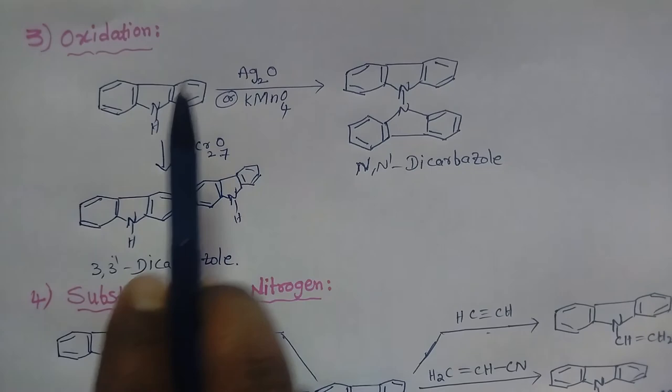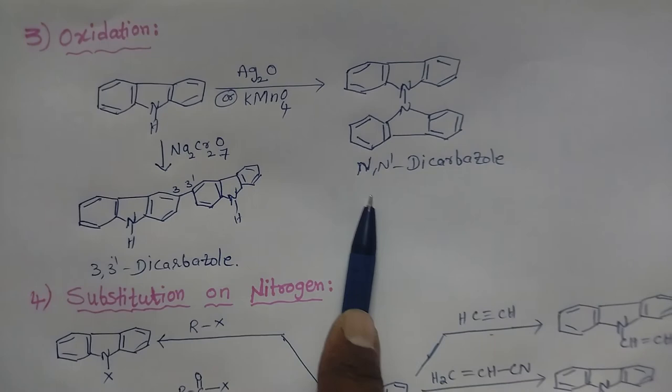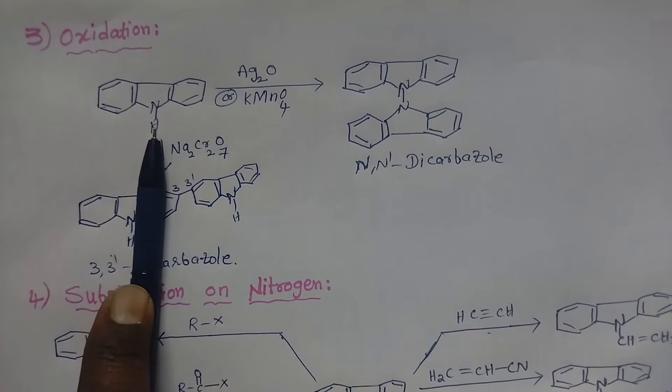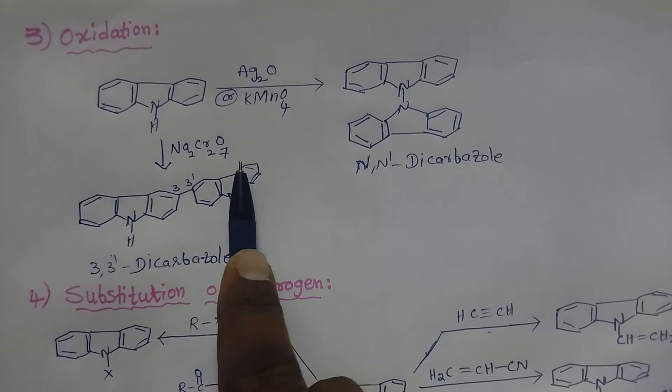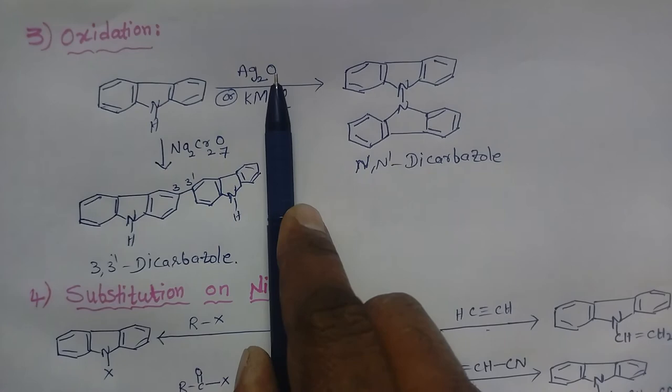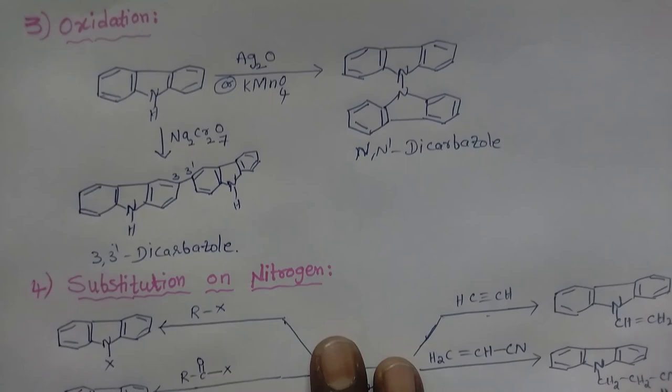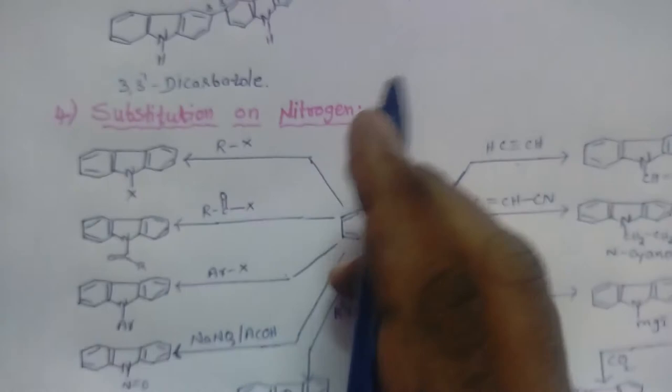For oxidation, when carbazole is oxidized with alkaline potassium permanganate we get N-dicarbazole, and when treated with sodium dichromate we get 3-dicarbazole. So depending on the oxidizing agent, we get different oxidized products.